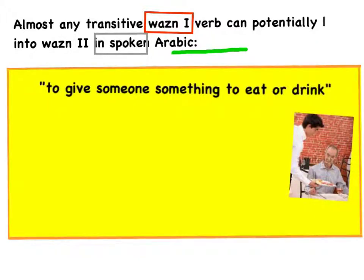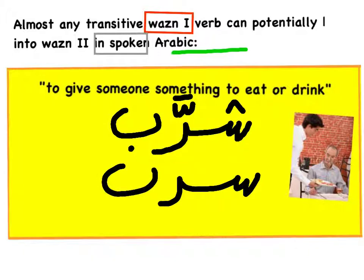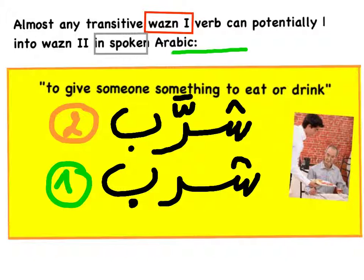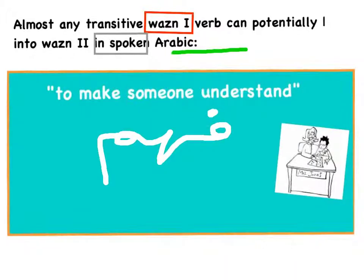To drive the point home, let's look at some examples. To give someone something to eat or drink — form 2: شَرَّب (sharrab), which comes from شَرِب (sharib) meaning to drink — form 1. All we had to do is add a shadda to change it to form 2. Similarly, to make someone understand: فَهَّم (fahham), with a shadda — form 2 — meaning you are making someone understand something. This comes from form 1: فَهِم (fahim).